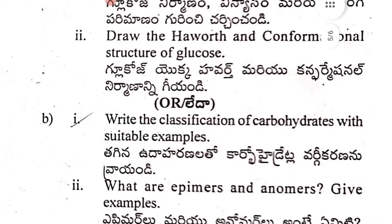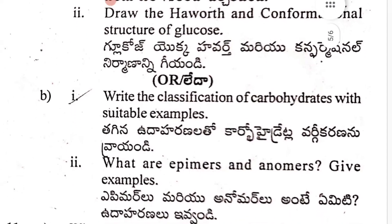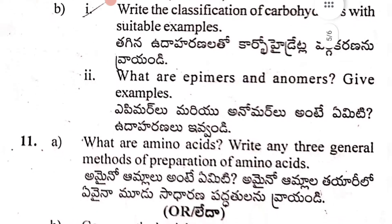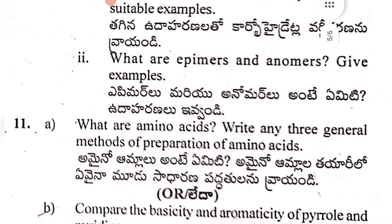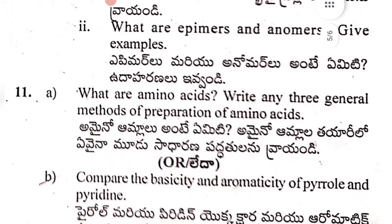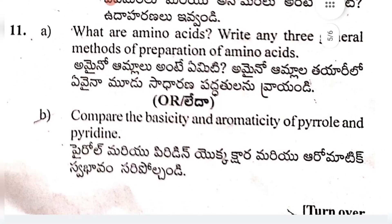Tenth B, first part: write the classification of carbohydrates with suitable examples — what are epimers and anomers, give examples. Eleventh A: what are amino acids? Write any three general methods of preparation of amino acids. Eleventh B: compare the basicity and aromaticity of pyrrole and pyridine.